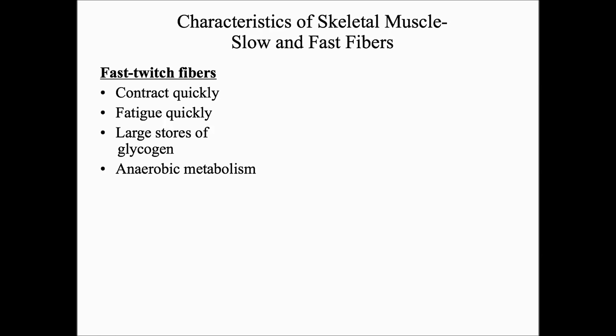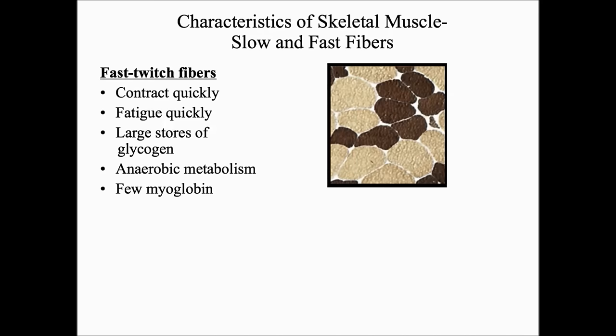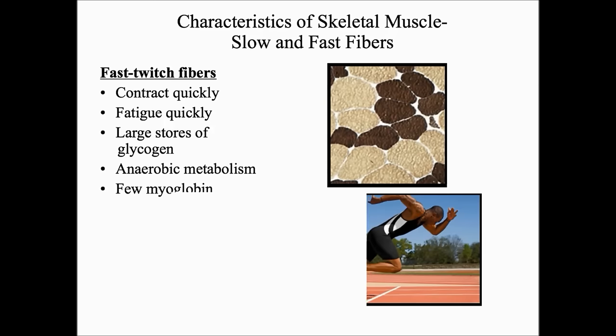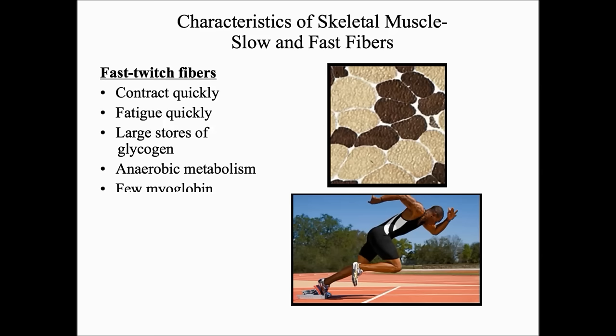Fast-twitch fibers have few myoglobin — myoglobin is a protein that binds to oxygen, similar to hemoglobin found in the blood. In the illustration, fast-twitch fibers are the light-colored fibers. They are used for explosive movements such as those used in sprinting.